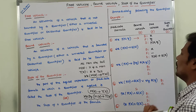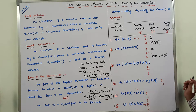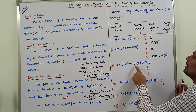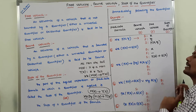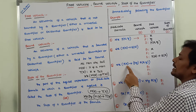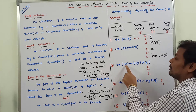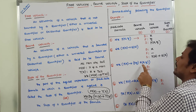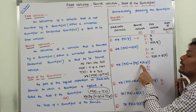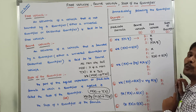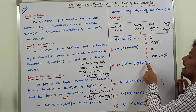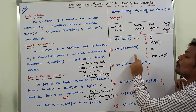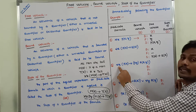For the third example: for all x, P(x) → there exists y, R(x, y). The predicate P belongs to only one subject, x. The predicate R belongs to two variables, x and y. The variable x is bounded by the universal quantifier.